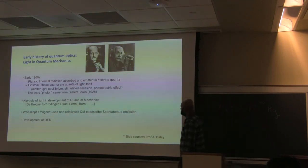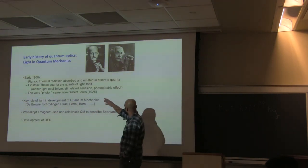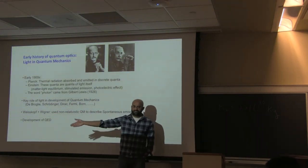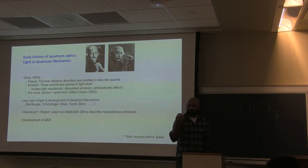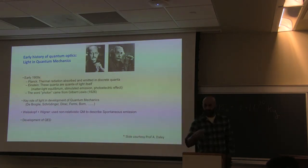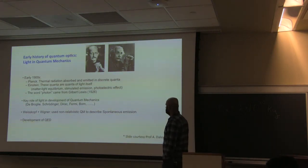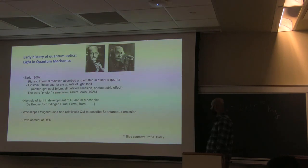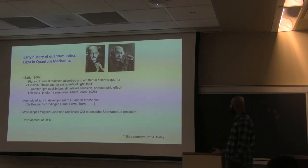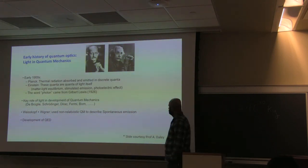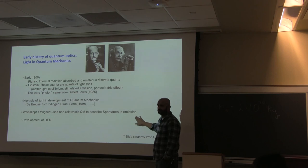The key role of light in the development of quantum mechanics — in terms of atomic spectra — is the other reason to understand quantization. They had to understand how light interacts with atomic systems, and that is the basis of the work of many famous scientists: de Broglie, Schrödinger, Dirac, Fermi, Born, and others.